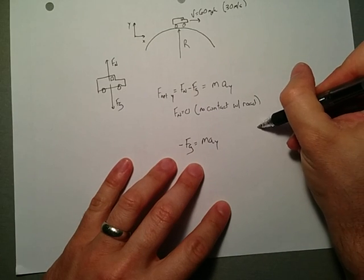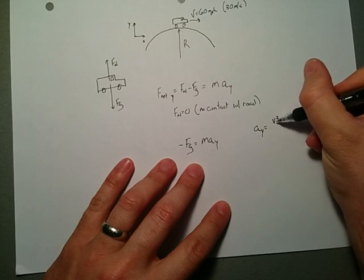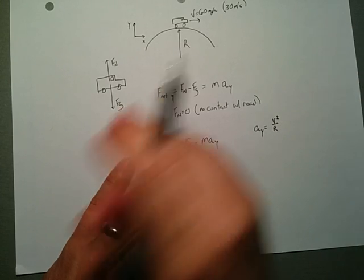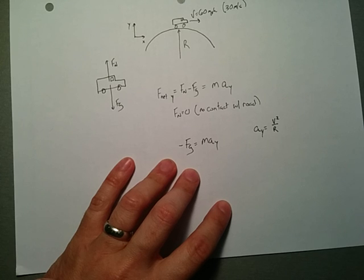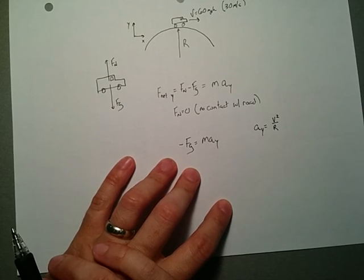And that acceleration that it experiences, in this case in the y direction, is just equal to v squared over r. Where r is the radius of the circle that it's traveling in. And v is how fast it's going.